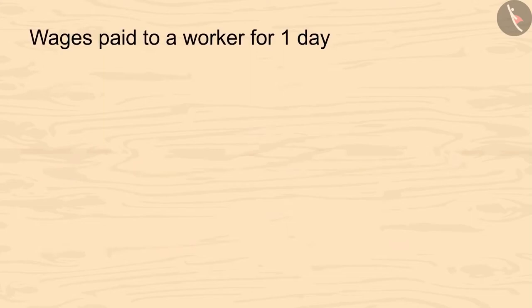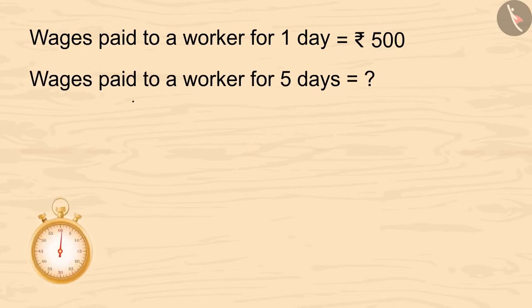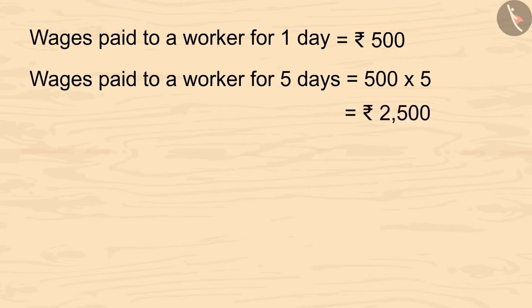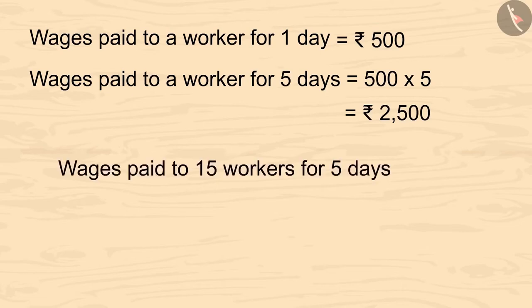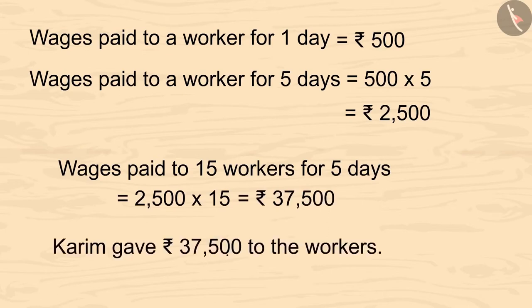Karim pays 500 rupees to each worker for a day's work. So in total, how much money did Karim pay them for five days of work? Kids, you can pause the video and calculate it. A worker got 500 rupees as wages for a day, so total wages for five days is 500 multiplied by 5, which means 2,500 rupees. There were a total of 15 workers, so we'll multiply 15 by 2,500, and the answer is 37,500 rupees. In total, Karim gave 37,500 rupees to the workers.